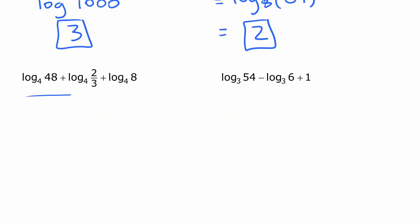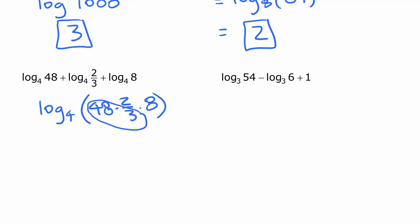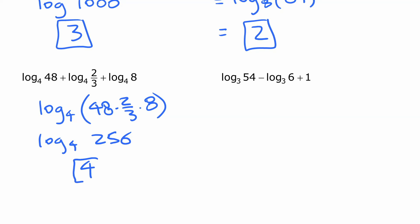The next example has three logarithms being added. Writing as a single logarithm gives log base 4 of 48 times two-thirds times 8. To keep numbers manageable, I'll do the division first: 48 divided by 3 is 16, then 16 times 2 times 8 is 256. So we have log base 4 of 256, and since 256 is 4 to the fourth power, this equals 4.